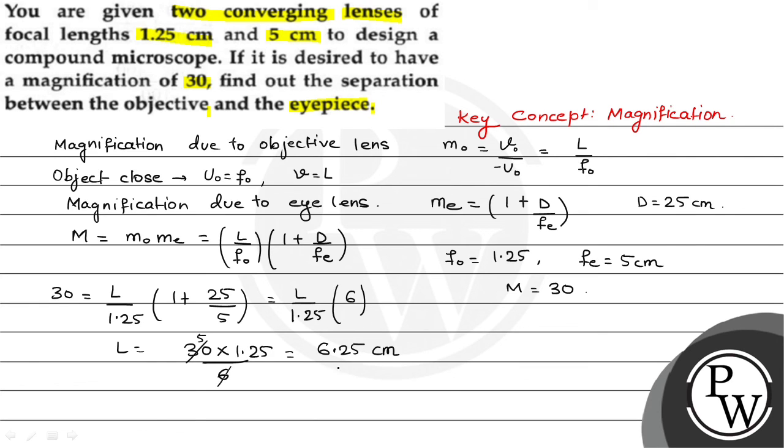The question asked us to find out the separation between objective and the eyepiece. That is equal to 6.25 cm. And this is our final answer. I hope you understood it well. Best of luck.